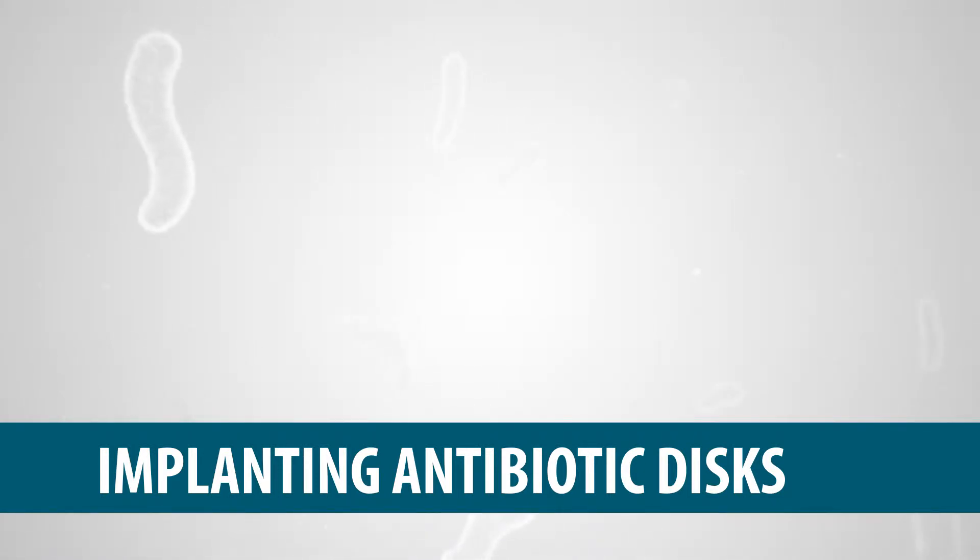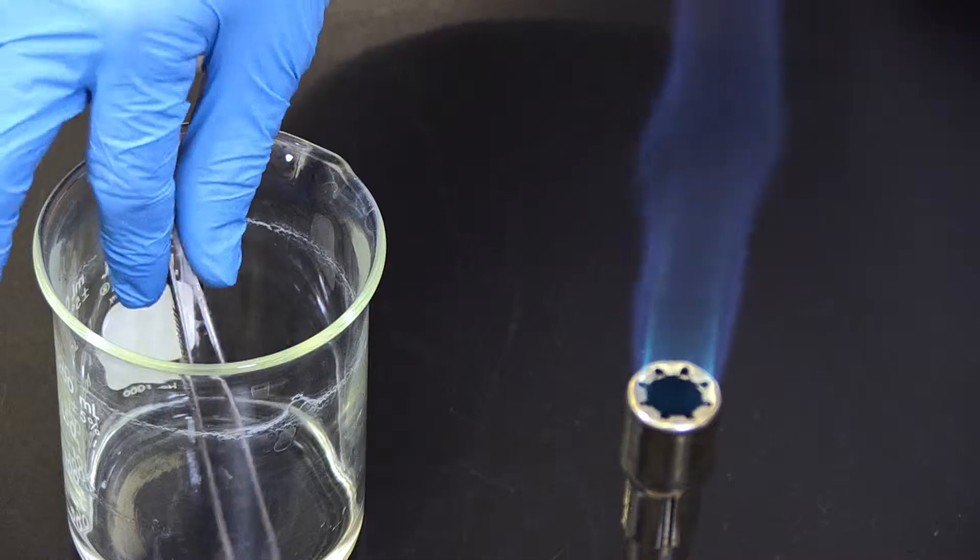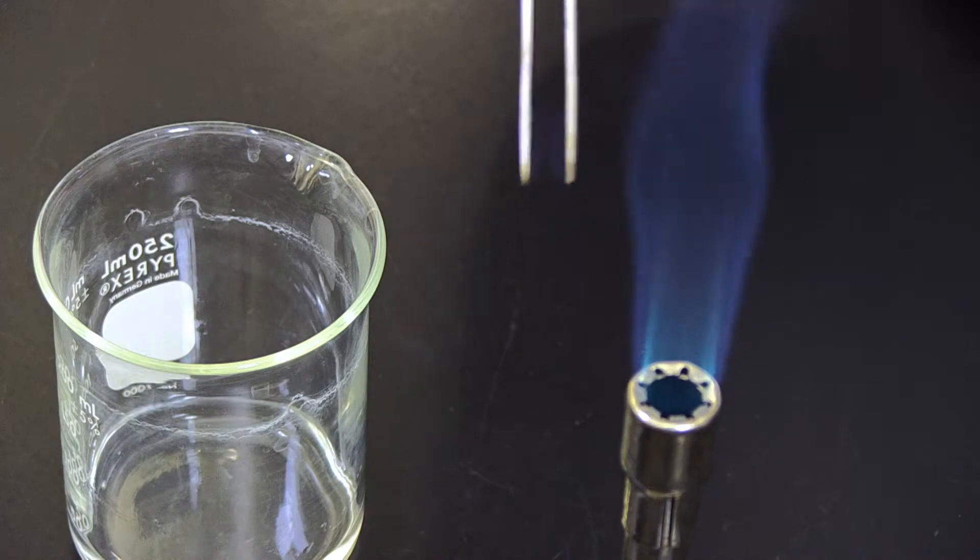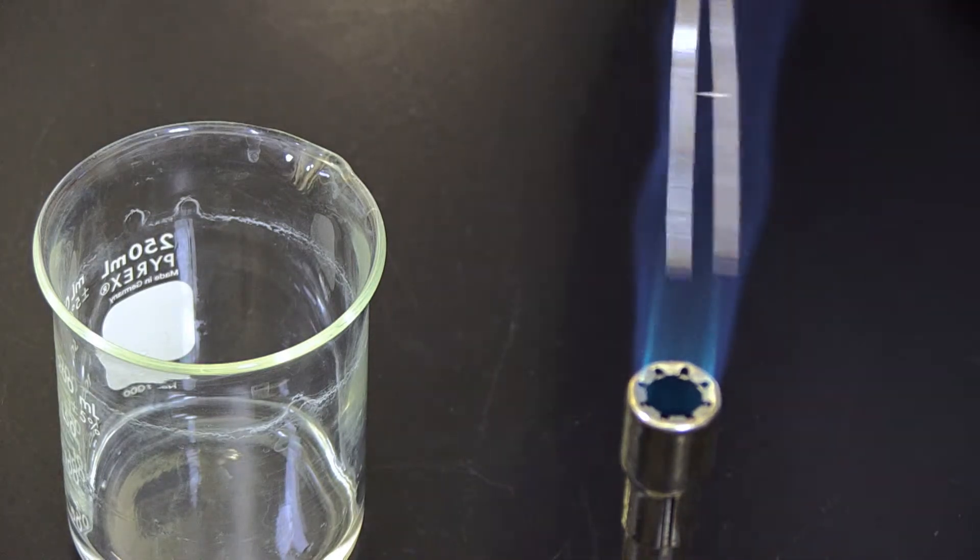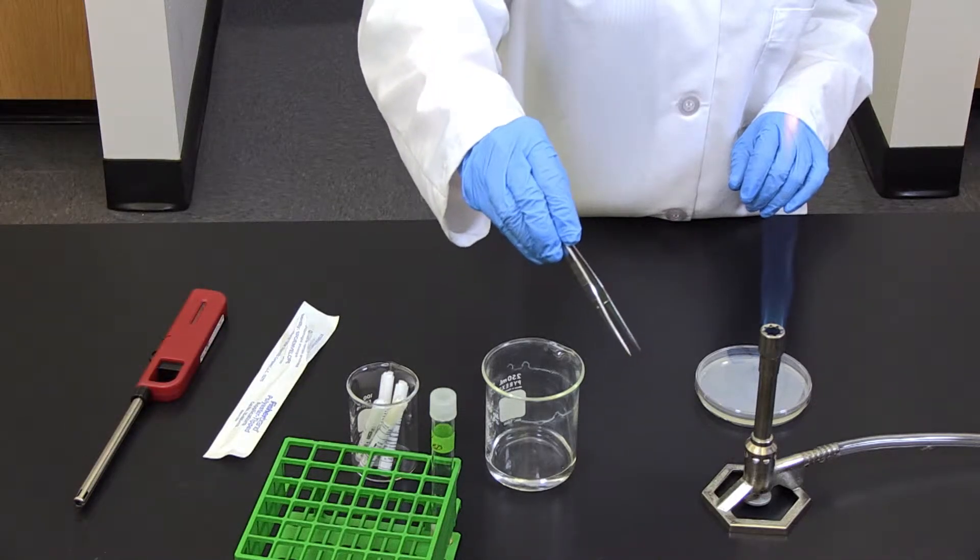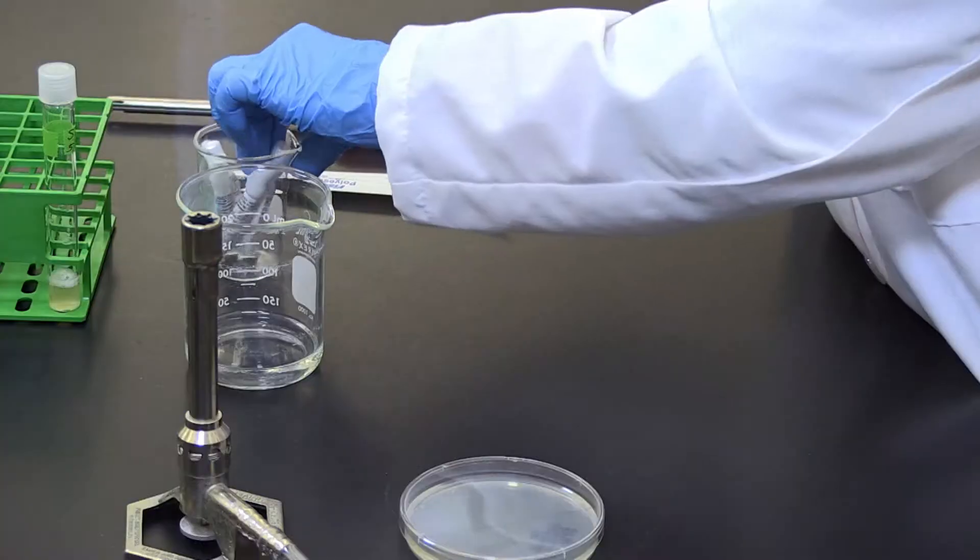Implanting Antibiotic Discs. Dip forceps into the ethanol beaker and burn off the alcohol while holding them pointed down over the Bunsen burner to sterilize.